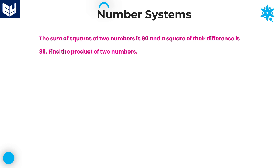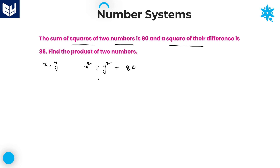Next question. The sum of squares of two numbers — let us take two numbers x and y. Sum of squares: x squared plus y squared equals 80. And the square of their difference: (x minus y) squared equals 36.